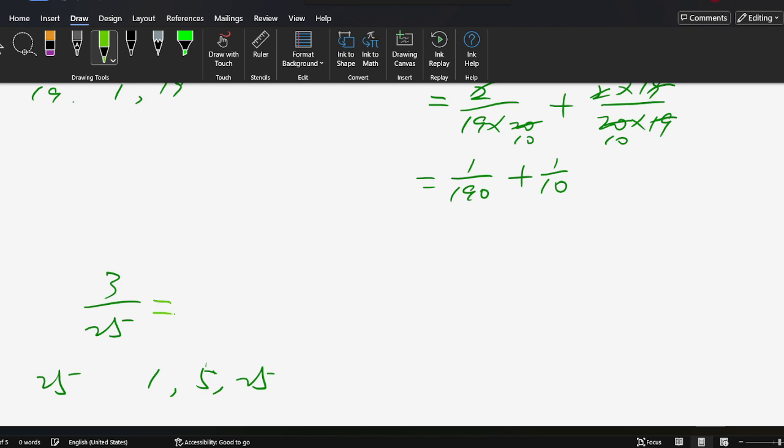Now solving this: 3/25 times (1+5)/(1+5) equals (3+15)/(25×6), which equals 3/(25×6) + 15/(25×6).